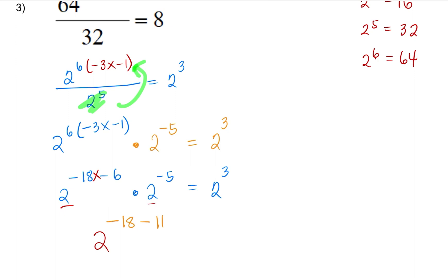Equals 2 to the 3rd power. Now that the bases are the same, we're going to stay focused on the exponents. So the exponent would be negative 18x minus 11 equals 3, isolating x, add 11 on both sides.